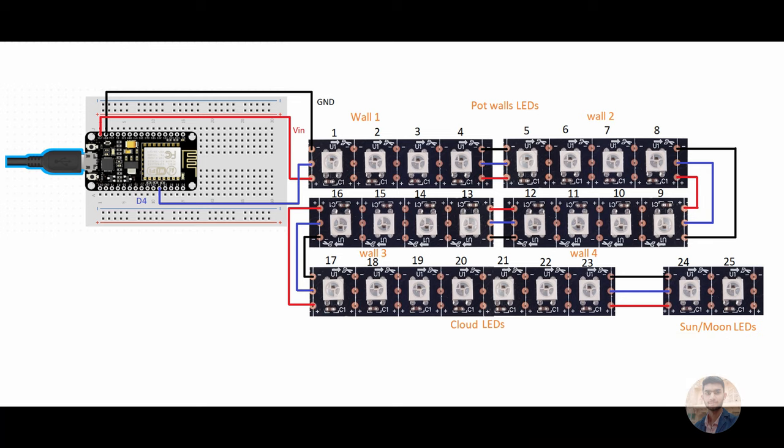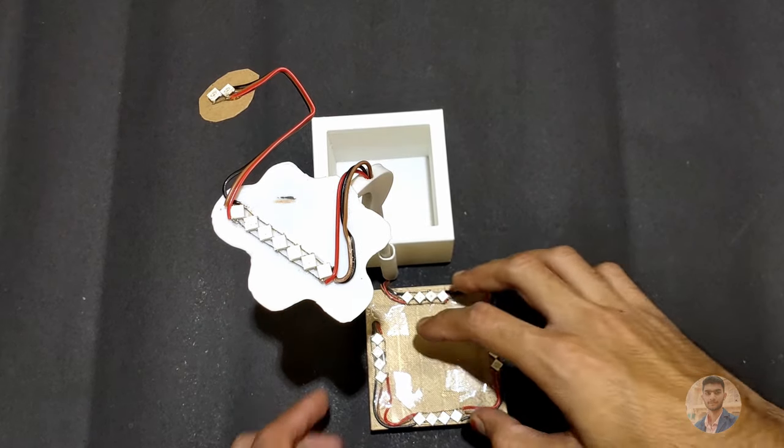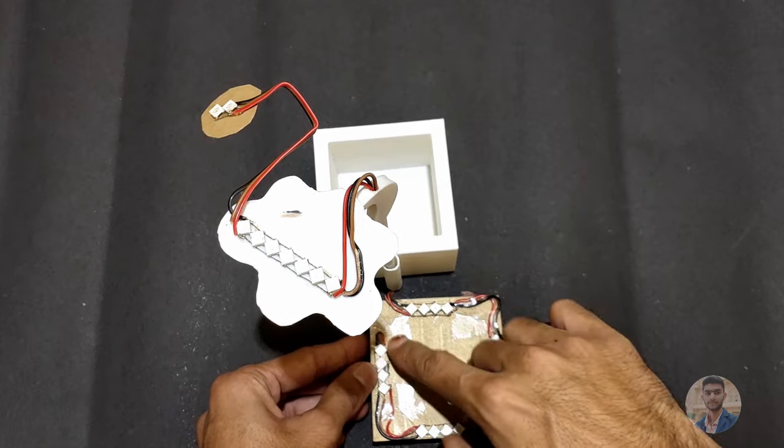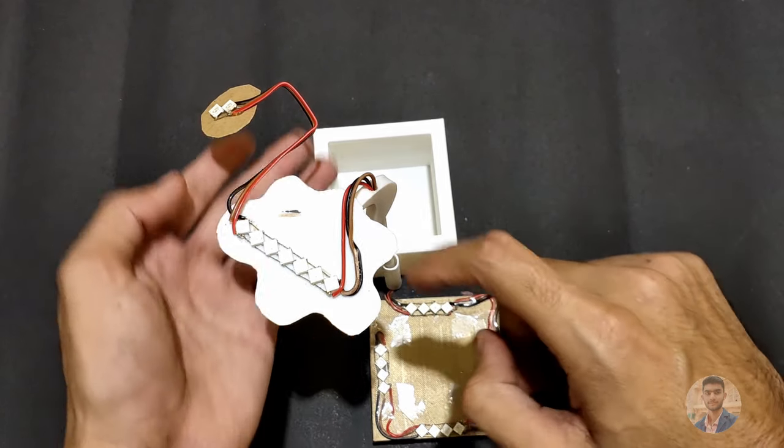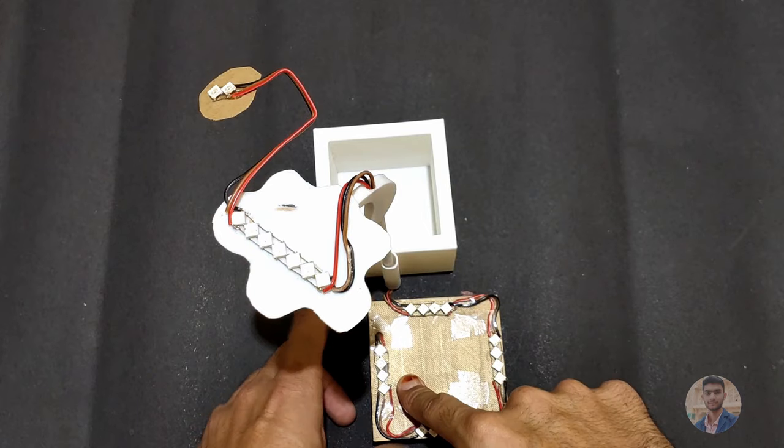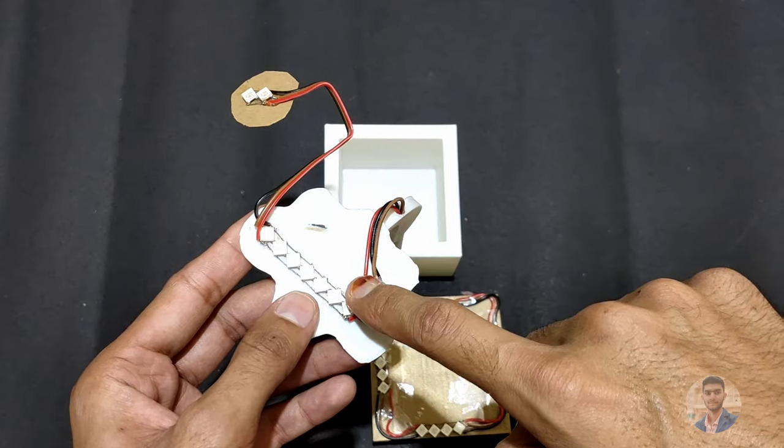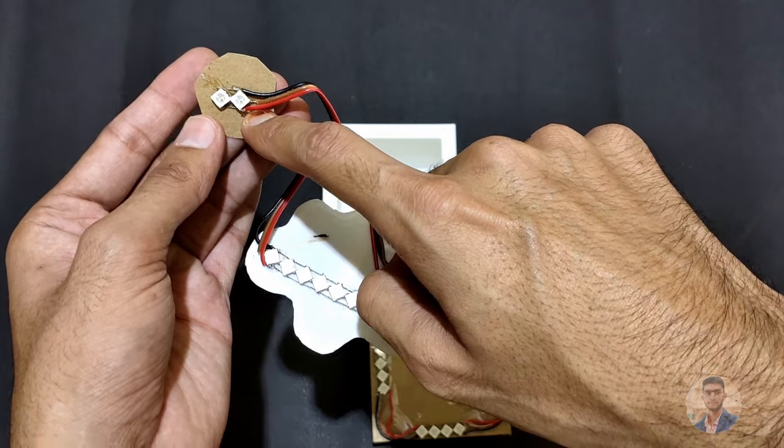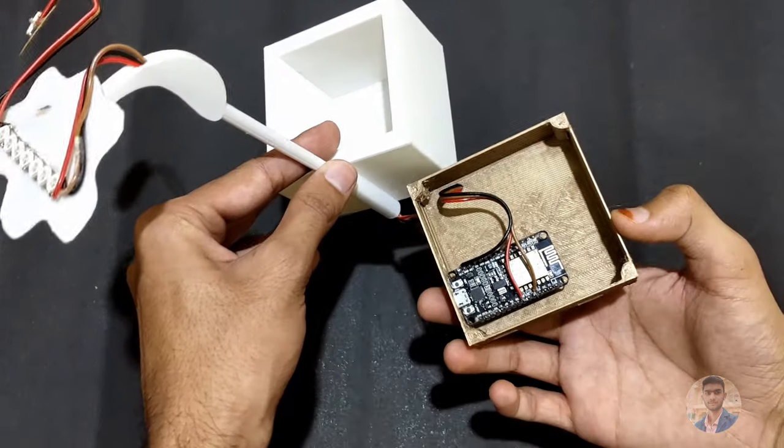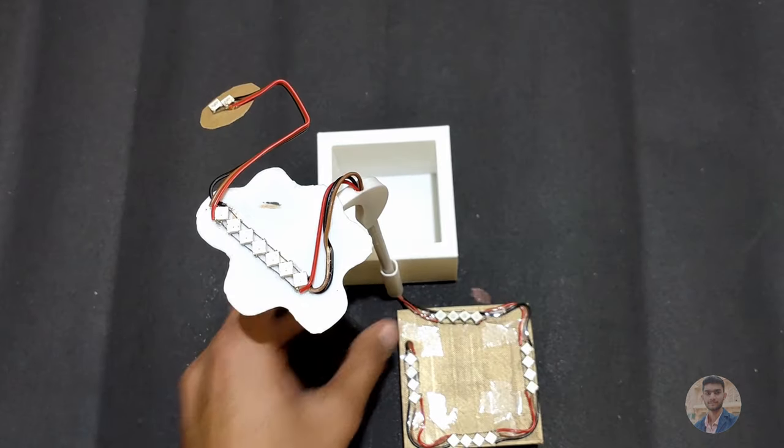As shown in the circuit diagram, I have soldered the LEDs counting from 1 all the way up to 25. Each wall has 4 LEDs, the cloud has 7 LEDs, and these 2 LEDs are for the sun or moon. The NodeMCU is placed under the base.